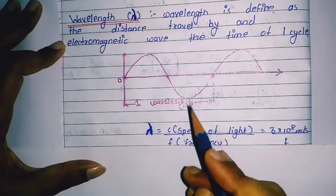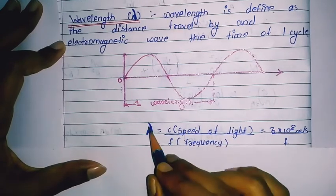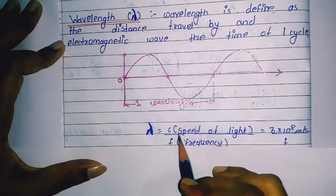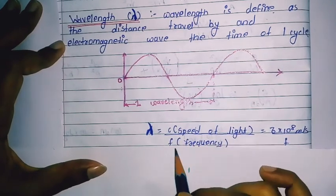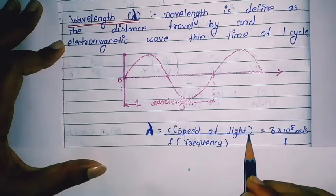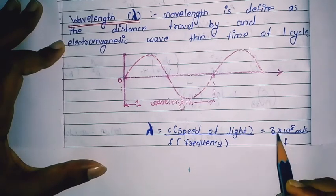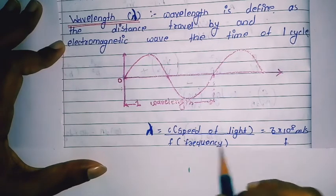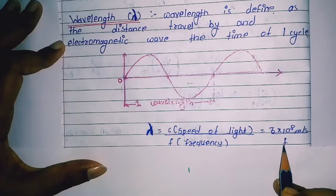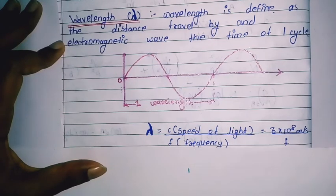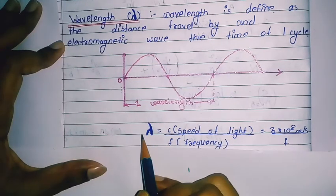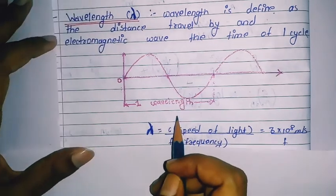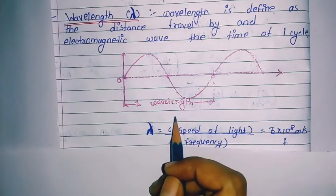The formula for wavelength is lambda equals c divided by f, where c is the speed of light and f is the frequency. The speed of light is 3 × 10⁸ meters per second and frequency f is in hertz, so the unit of wavelength is meters.